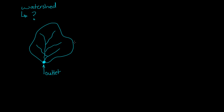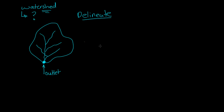Usually, watersheds are bounded by mountains, hills, ridges, and high points. That's the definition of a watershed. We need to learn how to delineate a watershed — basically, how to identify the watershed on a topography map.